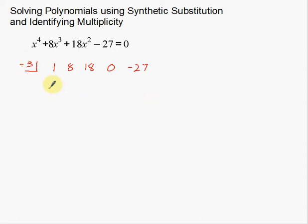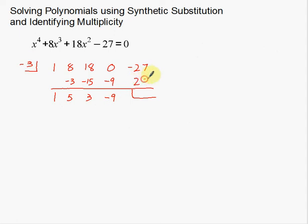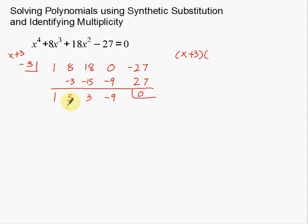Let's try negative 3. Bring the 1 down; multiply to get negative 3; add to get 5; multiply to get negative 15; add to get 3; multiply to get negative 9; add to get negative 9; multiply to get 27; add to get 0. Just by changing the sign, I found something that divides evenly. So x plus 3 is going to be a factor. The quotient is x cubed plus 5x squared plus 3x minus 9.